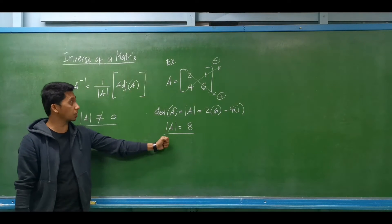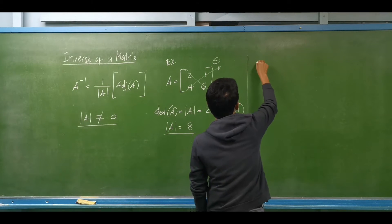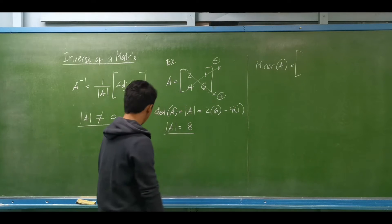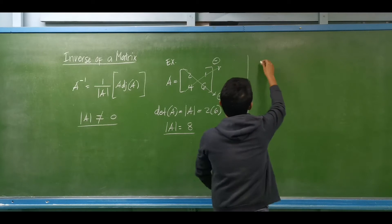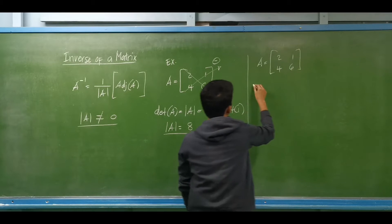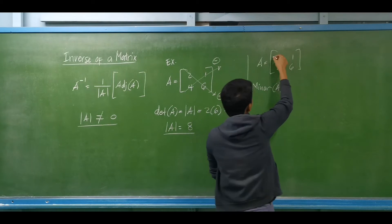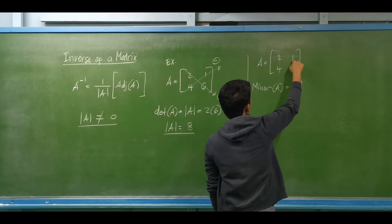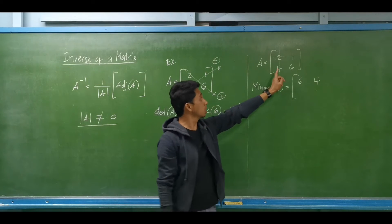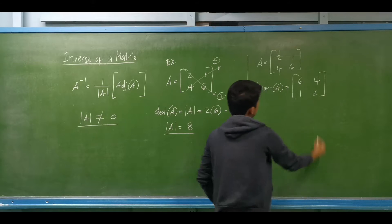After we have the determinant of matrix A, we have to determine the adjoint. First we determine the minor matrix of matrix A. For matrix A with elements 2, 1, 4, 6: the minor of the element at position (1,1) — cross out first row and first column — equals 6. The minor of (1,2) — cross out first row and second column — equals 4. The minor of (2,1) equals 1, and the minor of (2,2) equals 2.